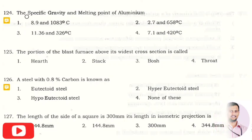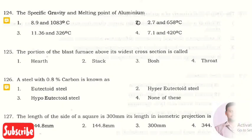The next question is: the specific gravity and melting point of aluminum? The right option is option two, that is 2.7 and 658 degrees Celsius.